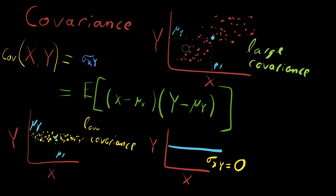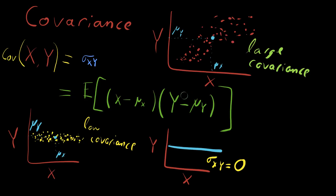You might look at this and say these variables are just linearly correlated. And it's true — correlation and covariance are related concepts. But covariance is the more basic idea, and you can actually calculate and derive correlation as an extension of covariance. They are quite related concepts.